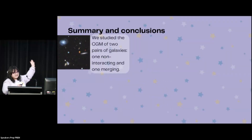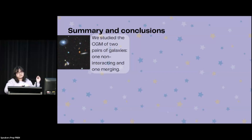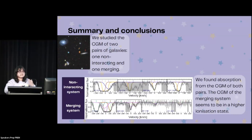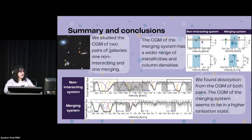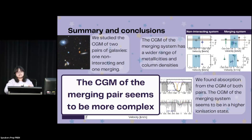As a summary: we studied the circumgalactic medium of two pairs of galaxies — one non-interacting and one merging. We found absorption from the circumgalactic medium of both pairs, and the CGM of the merging pair seems to be in a higher ionization state. The circumgalactic medium of the merging system also has a wider range of metallicities and column densities. In conclusion, the circumgalactic medium of the merging pair seems to be more complex. Thank you.